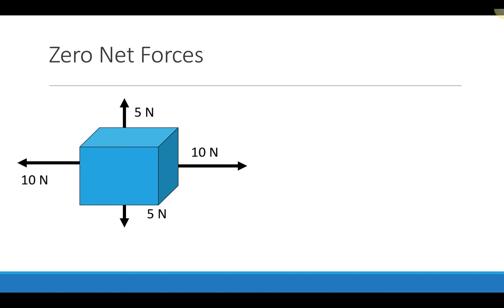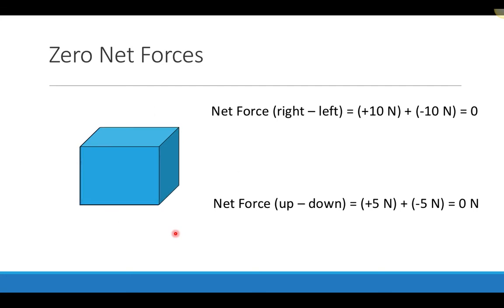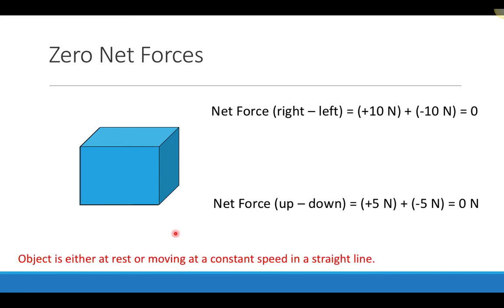You can have multiple forces acting on an object and still have zero net force. For example, ten newtons to the right and ten newtons to the left cancel to zero, and five newtons up and five newtons down also cancel to zero. So individual forces can act on an object while the net total force is still zero. When the net force is zero, the acceleration is zero, meaning the object is either at rest or moving at a constant speed in a straight line.